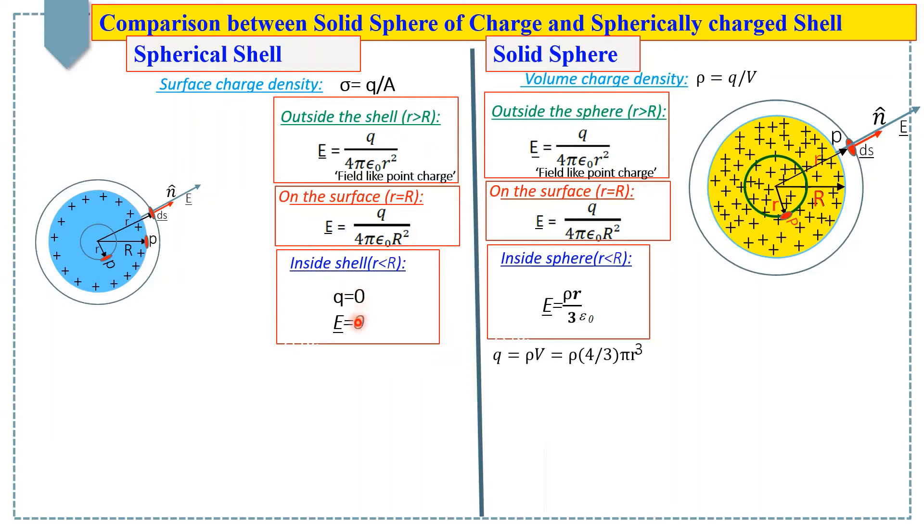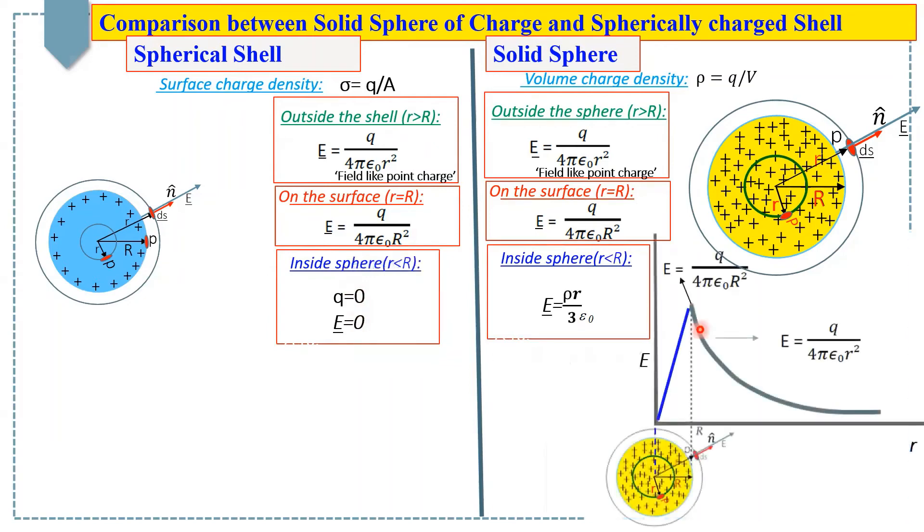So, now in the graph, we can understand easily the cases of the electric field variation with respect to radius or distance from the radius. In spherical case,